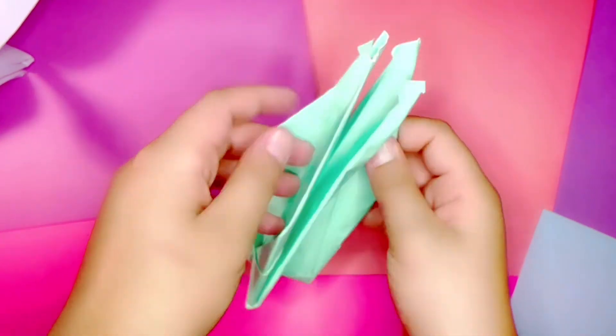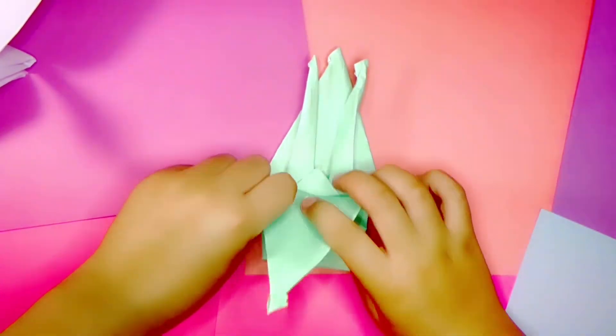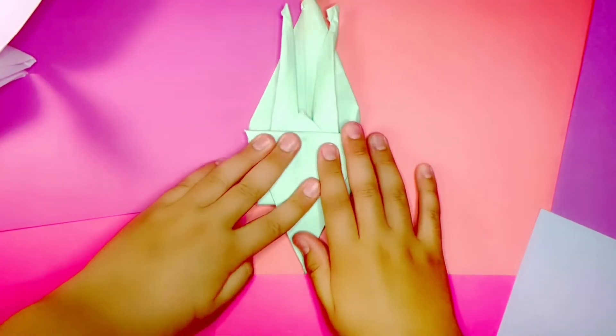Fold both wings down where two different angles meet on the flat wings. Press the folds.